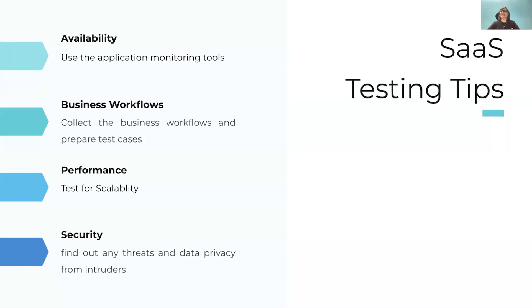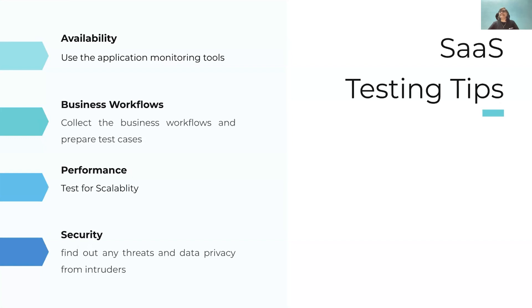Testing business workflows is critical and important in any application. Business workflows are the scenarios every user will use often, and without them they are not able to perform their tasks at all. We need to collect the business workflows and prepare test cases for those, and in every release execute these test cases to confirm scenarios are working flawlessly. Performance is the most critical part of a SaaS application — every module should be performance tested along with the business workflows. The application should be scalable under heavy usage, so we need to build a strategy for capacity planning and perform performance testing periodically. Security testing also needs to be carried out to find any threats and data privacy issues from intruders.